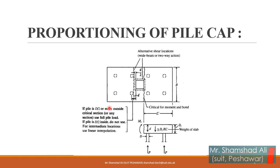This is basically the proportioning of the pile cap showing the alternative shear location. Here you can see the pier of a bridge or similar structure. This is the pile group and this is the pile cap. Shown here is the minimum distance from the edge of the pier to the end of the pile cap, the critical moment, the end bound, and the weight of the slab, along with the applied forces.